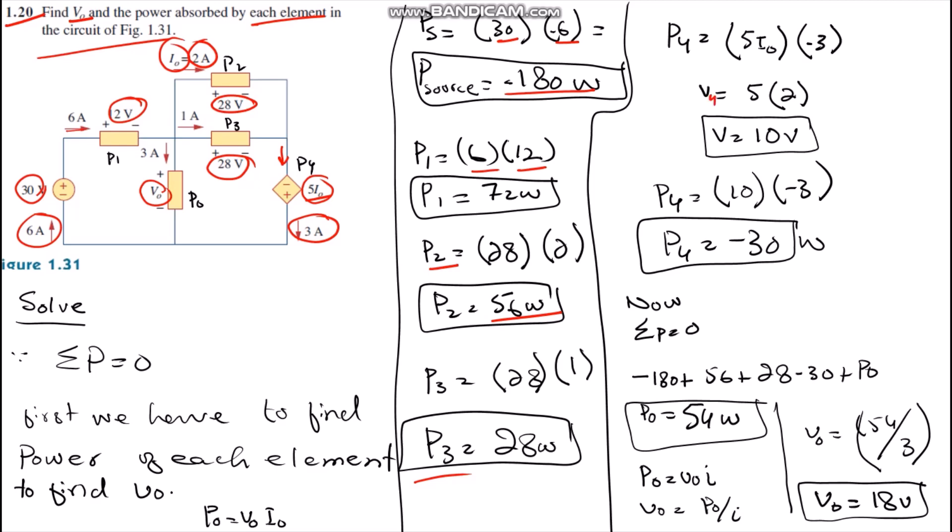We simply solve the equation: V4 equals 5 I naught. I naught is 2 amperes in the circuit as shown, so we get V equals 10 volts. Then we substitute the values: 10 volts and negative 3 amperes current, and we get P4 equals minus 30 watts.